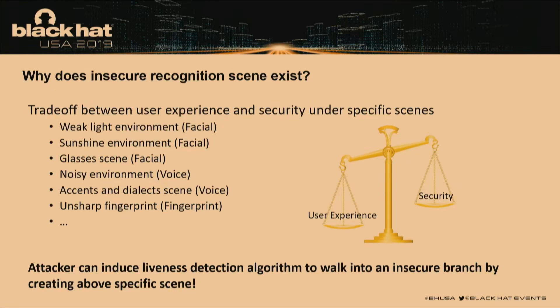The second part is how we exploit insecure recognition. Why does this kind of weakness exist? When vendors like Apple design their biometric authentication, they have to consider special situations — like different lighting environments, users wearing glasses, background noise, and accents. They must balance user experience and security, so not all security checks are always used. Attackers can utilize these situations to control the detection scenario and conduct an attack.